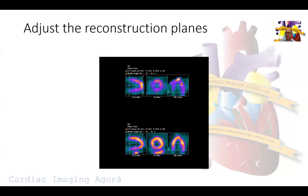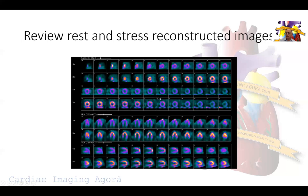These are the reconstructed images, so we start with rest on the bottom and stress images on top. We align the borders of the heart, try to eliminate as much extra-cardiac activity as we can, center this on the bullseyes, and then we process.